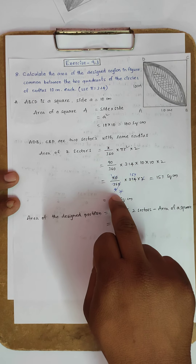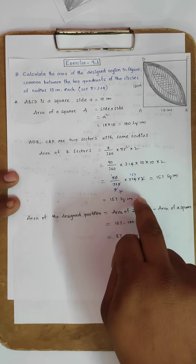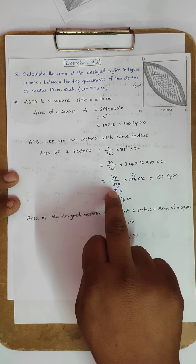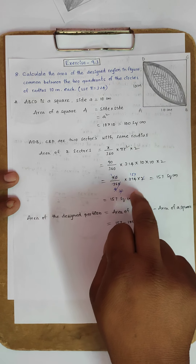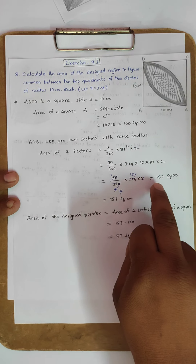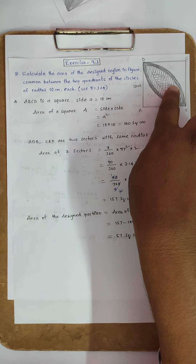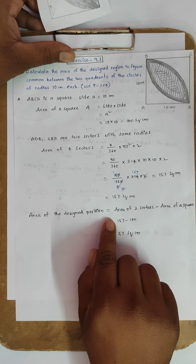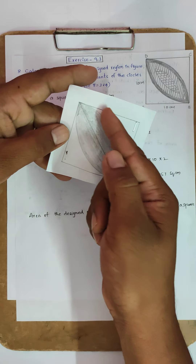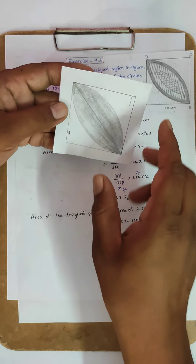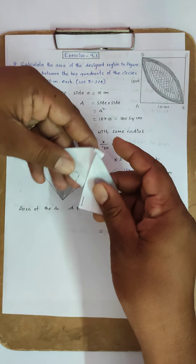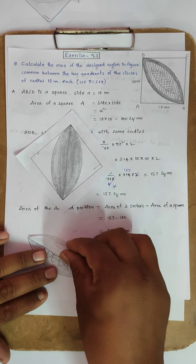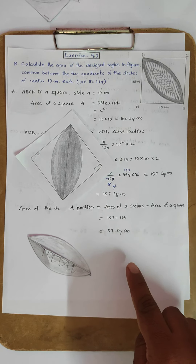After cancellation: 90/360 reduces, and simplifying gives (1/2) × 3.14 × 100 × 2 = 314/2 = 157 square centimeters as the area of the two sectors. Area of the shaded portion = area of two sectors minus area of square = 157 minus 100 = 57 square centimeters.